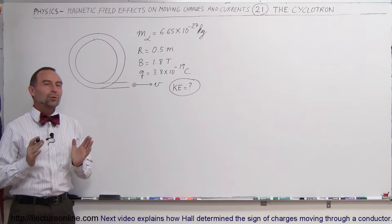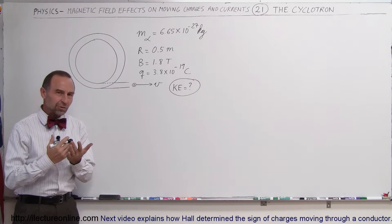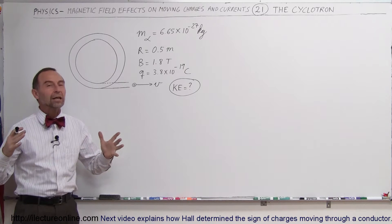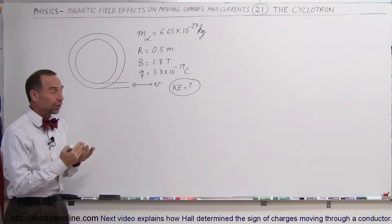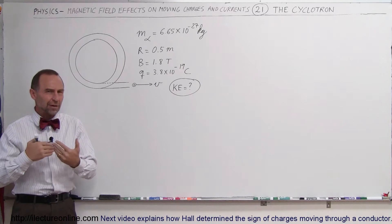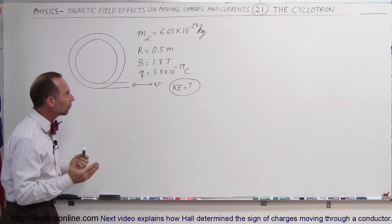Welcome to ElectronLine and now we're going to talk about the cyclotron. The cyclotron is a device relatively small in nature. It packs a punch. It's able to take small particles like alpha particles and accelerate them into very high velocities and therefore very high kinetic energies. How does it do that?